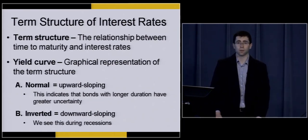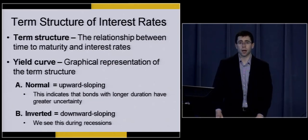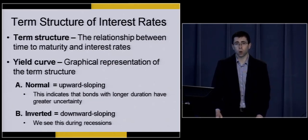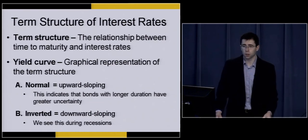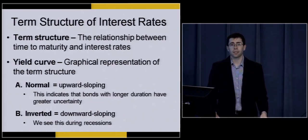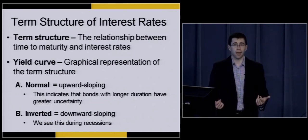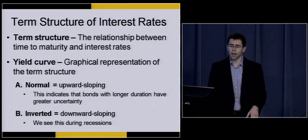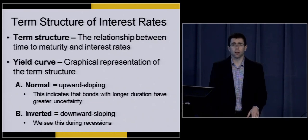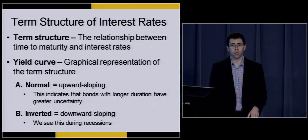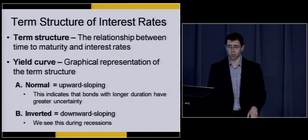These yield curves occur at different points in time. Most of the time we're going to see a normal or upward-sloping yield curve, which indicates that bonds with a longer time to maturity are going to come with higher interest rates. Inverted yield curves are typically seen far less frequently. Typically, when we see an inverted yield curve, that indicates that we are either in a recession or very close to a recession.